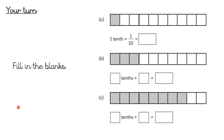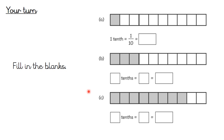Here is your second exercise. Part a has one tenth shaded — what is one tenth as a decimal? Part b has all three boxes empty: tell me how many tenths are shaded, then show those tenths as a fraction and as a decimal. Part c is the same — how many tenths are shaded, as a fraction, and then as a decimal. Pause the video and have a go.